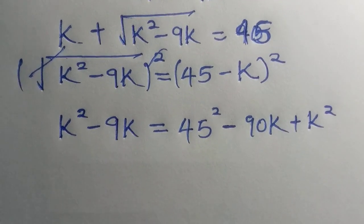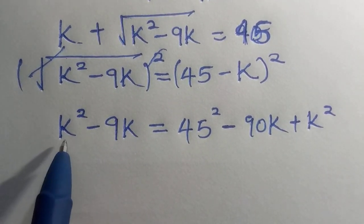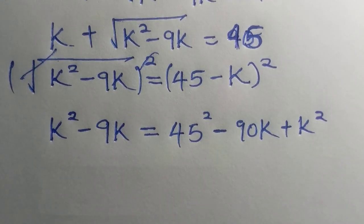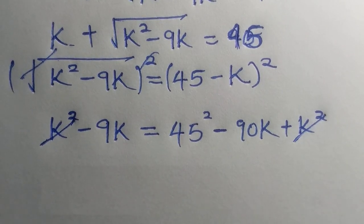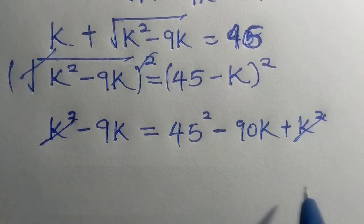And what I observe here is, at this side we have k square, and at this side we have k square. If k square and k square cancels, since both of them have the same positive sign, they cancel each other.